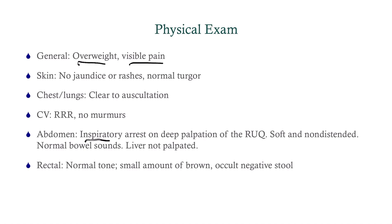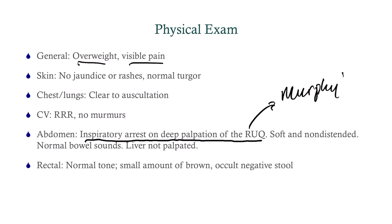Abdomen shows inspiratory arrest on deep palpation of the right upper quadrant — that's Murphy's sign. It's important you understand what that means and what it implicates. The liver is not palpated, and the rectal exam was normal.